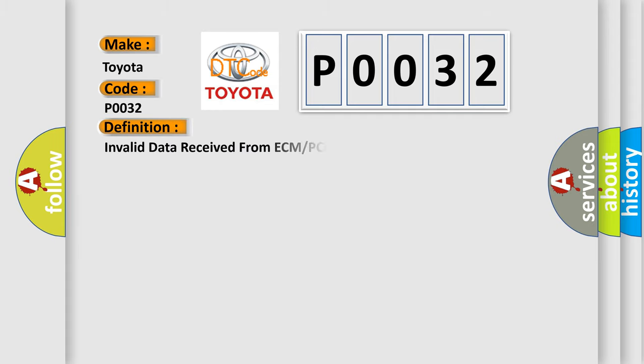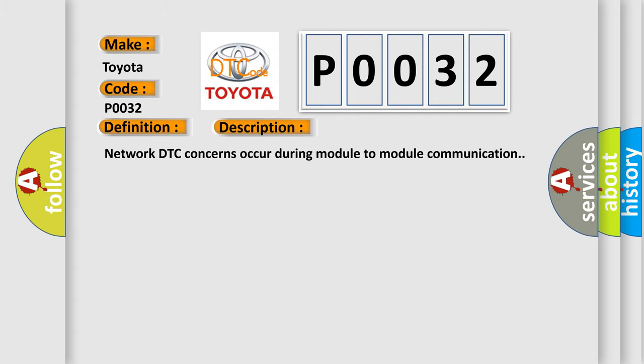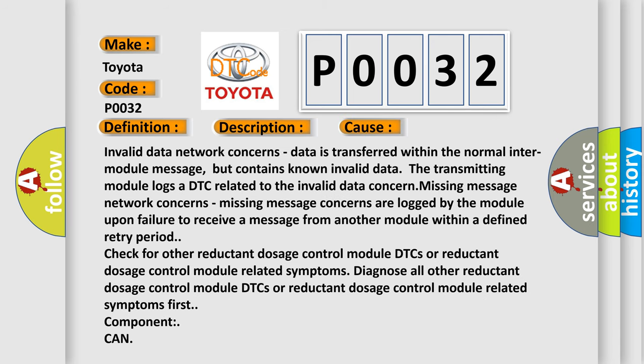The basic definition is: Invalid data received from ECM or PCM. Network DTC concerns occur during module-to-module communication. This diagnostic error occurs most often in these cases: invalid data network concerns, where data is transferred within the normal inter-module message but contains known invalid data. The transmitting module logs a DTC related to the invalid data concern.